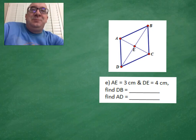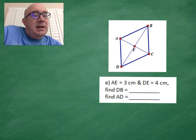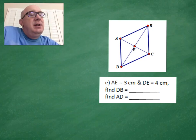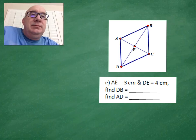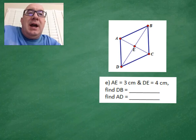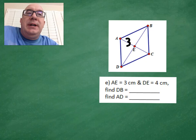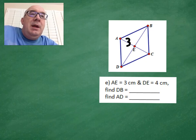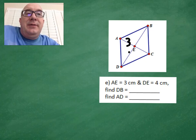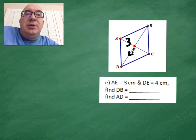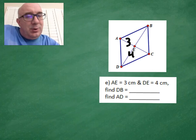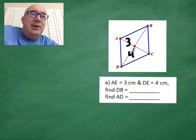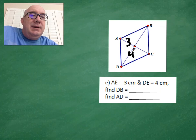This is a classic spot to get stuck. They give you half of a diagonal which is three, and they give you another half of a diagonal which is four. Sometimes they'll give you the whole length to make it a little harder. Let's see what they want to know.